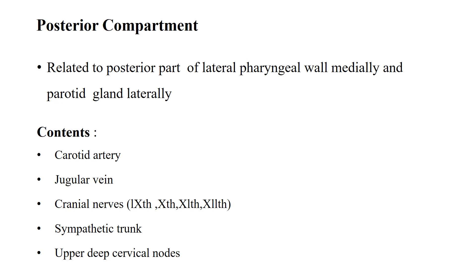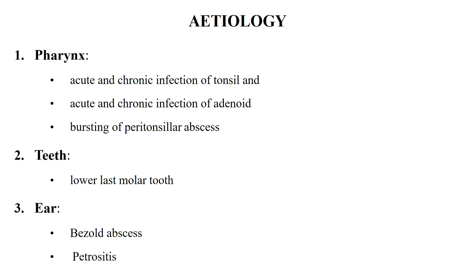The contents, mainly in the posterior compartment, include the carotid artery, the jugular vein, cranial nerves 9th, 10th, 11th, and 12th, along with the sympathetic trunk and upper deep cervical lymph nodes. Parapharyngeal abscess is also known as abscess of the pharyngomaxillary or lateral pharyngeal space.